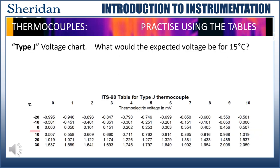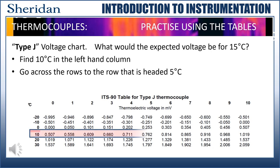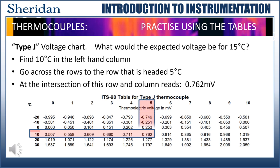Here's one that's going to work the other way. We have a type J. What would the expected voltage be if it was 15 degrees Celsius? So the first thing we do is we have to find 10 in the left-hand column. So we have our plus 10. And then we shoot across until we find the 5 column. And where the 2 meet, we find it reads 0.762 millivolts.